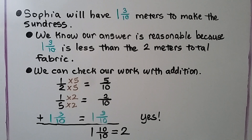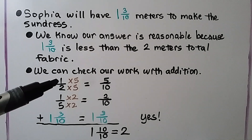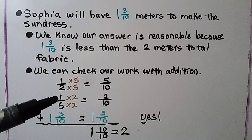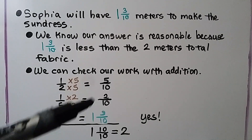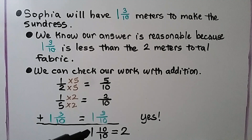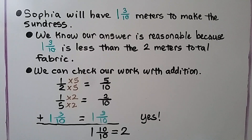Sophia will have 1 and 3 tenths meters to make the sundress. We know our answer is reasonable because 1 and 3 tenths is less than the 2 meters total fabric. We can check our work with addition: we add the half meter, the fifth meter, and the 1 and 3 tenths, which gives us 10 tenths — that's 1 whole — so together that's 2. It makes sense. We used subtraction as we worked backward to find the value of m, and we used addition to check our work as an inverse operation.